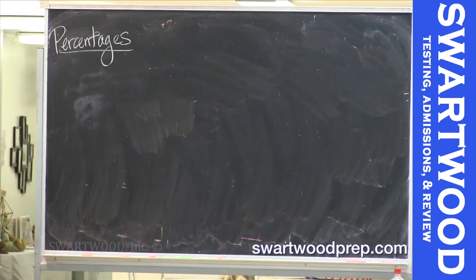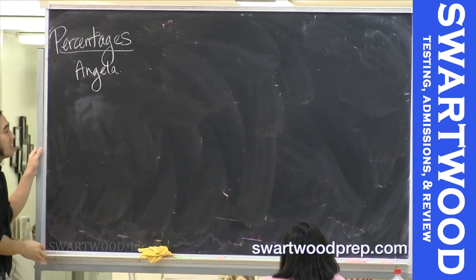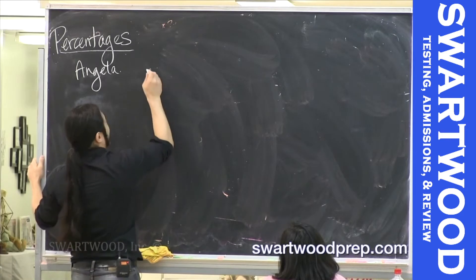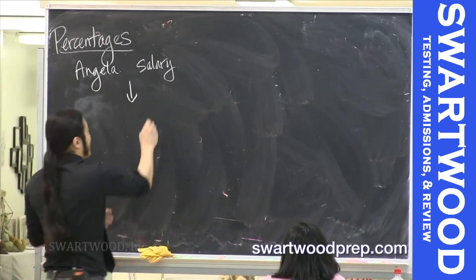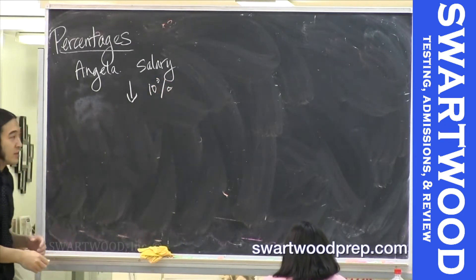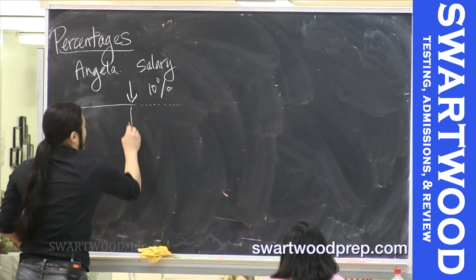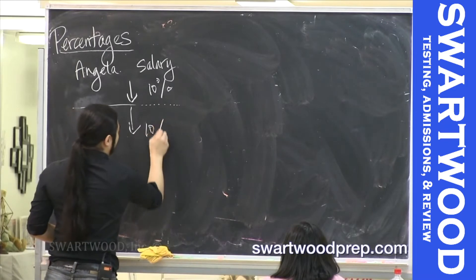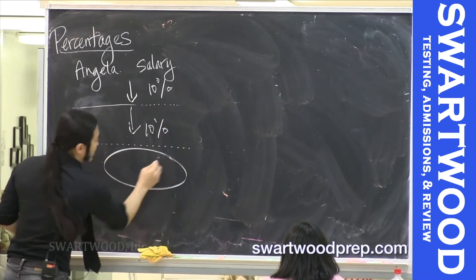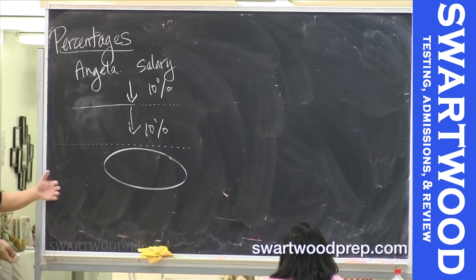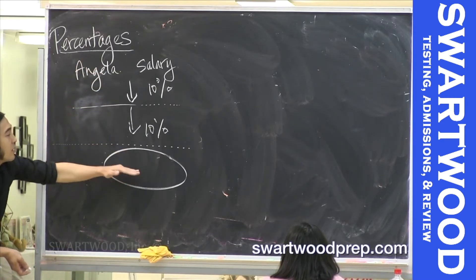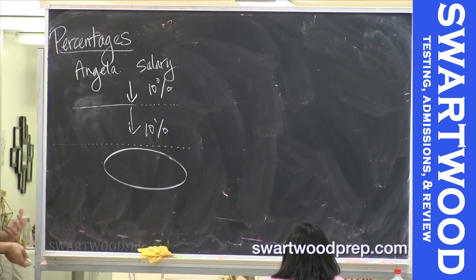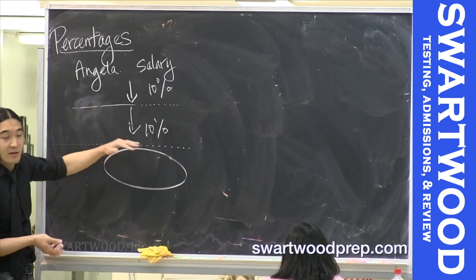Did you guys work at all on that problem? So let's say you have Angela, and she starts off with a salary — an initial salary. In the first year she gets a raise, a 10% raise. Then the following year she gets another 10% raise. The question is: what is the percent increase in her income in the third year relative to what she had in the first year? So what's the percent increase in her income by the time she has both raises from her starting income?